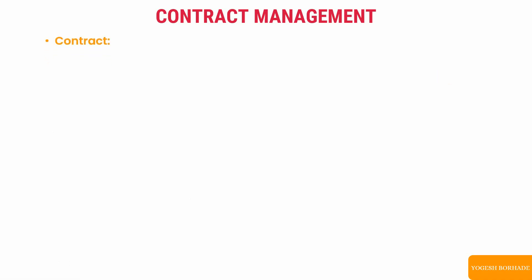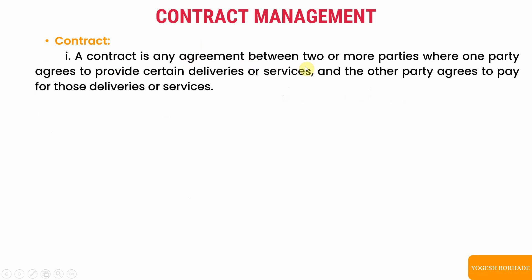Before moving to contract management, let's first understand what is meant by a contract. A contract is any agreement between two or more parties where one party agrees to provide certain deliveries or services and the other party agrees to pay for those deliveries or services. For example, you want to construct a house, you pay money to the builder, and the builder constructs the house — that mutual understanding and agreement is a contract.